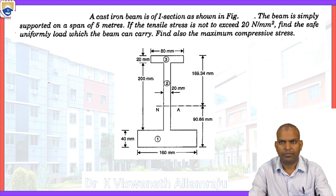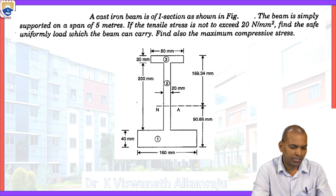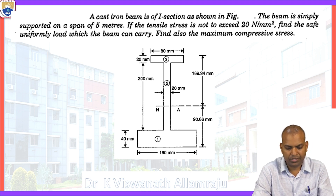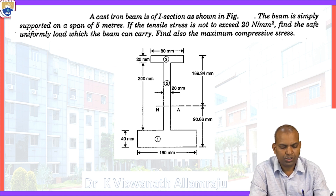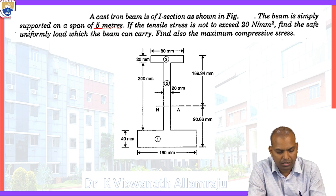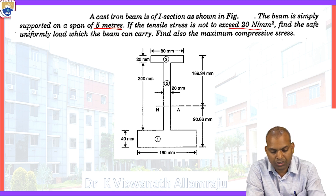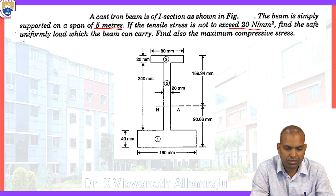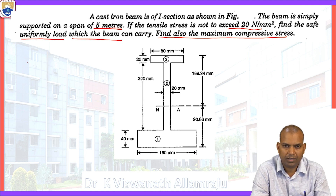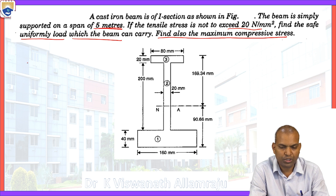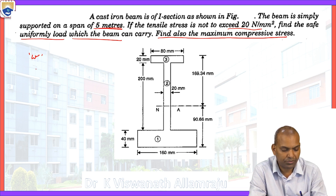The Bloom's taxonomy level for this topic is the apply level. Now let us begin the unsymmetric sections problem. Here it is an unsymmetric section about the x-axis, that is the neutral axis parallel to x-axis. The beam is a cast iron beam of I-section as shown in figure. It is a simply supported beam on a span of five meters. The tensile stress is not to exceed 20 Newton per square millimeter. We need to find the safe uniformly distributed load w the beam can carry, and also find the maximum compressive stress sigma c.